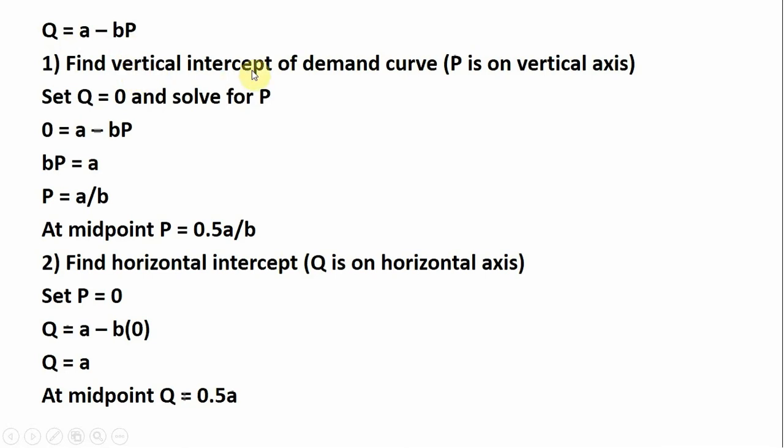First we're going to find the vertical intercept of the demand curve. Remember when we graph demand curves, price is on the vertical or y-axis and quantity is on the x or horizontal axis. With price on the vertical axis, we're going to set Q equal to 0 and solve for price. So 0 equals A minus B times price. Moving some things around and dividing by B, price equals A divided by B. That's where the demand curve touches the vertical axis.